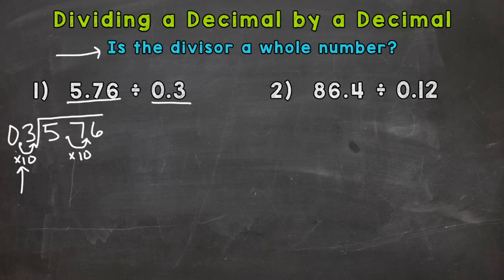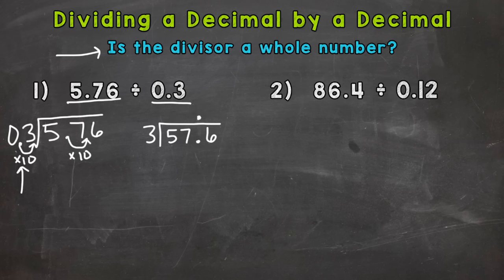Now we're ready to set up our problem with a whole divisor. Let's rewrite our problem neatly. We have three as our divisor, and for our dividend we have 57 and six tenths. Is our divisor whole? Yes — so we can start. Bring the decimal straight up and go through the division process.